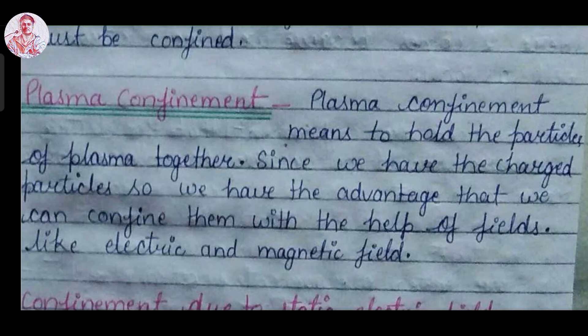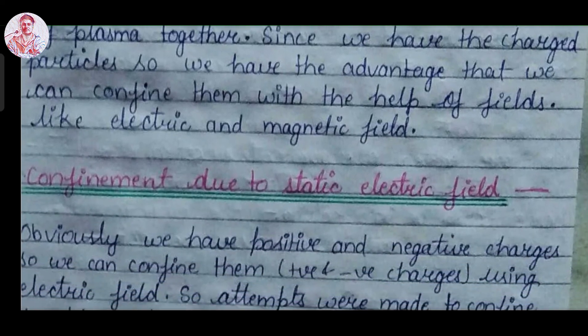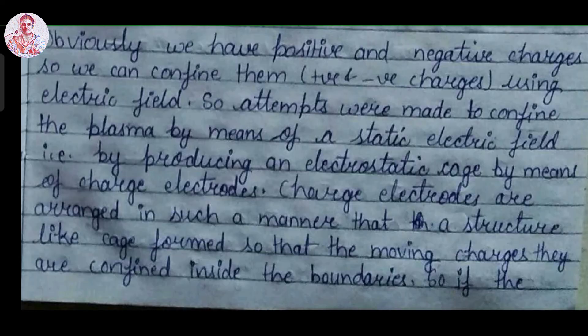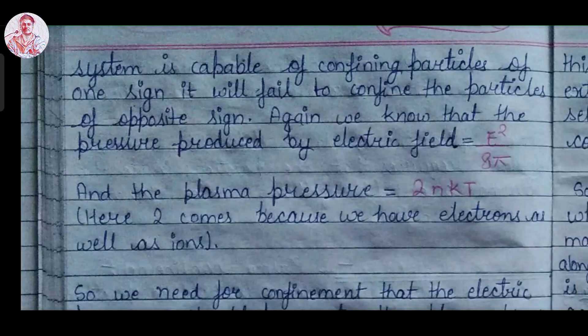The first technique of plasma confinement is confinement due to static electric field. Since we have positive and negative charges, we can confine them with the help of an electric field. Attempts were made to confine the plasma by means of a static electric field by producing an electrostatic cage by means of charged electrodes arranged so that moving charges are confined inside the boundaries. The pressure produced by the electric field is given by E squared over 8 pi.